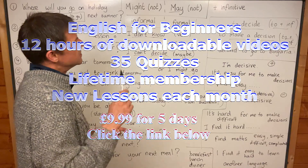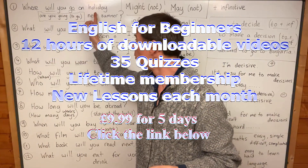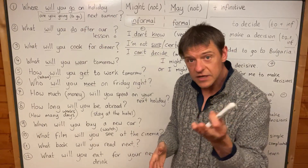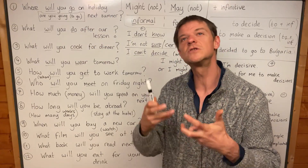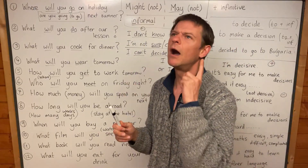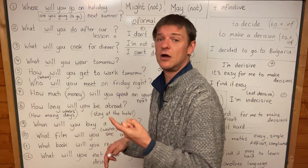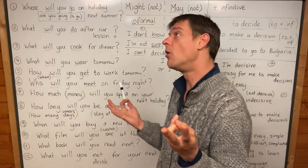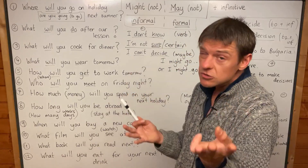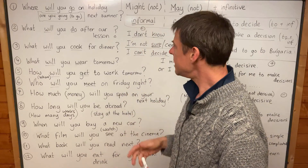Now you make a decision. Do you know where you will go on your next holiday next summer? I want you to answer with might. For example: I might go to Germany, or I might go to Austria, or I might go to Russia. You choose — might go.